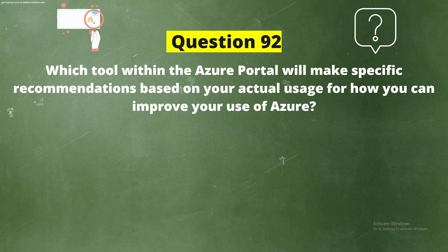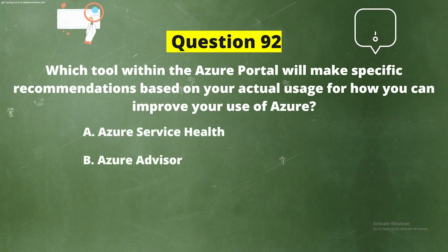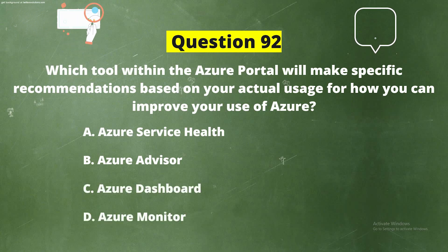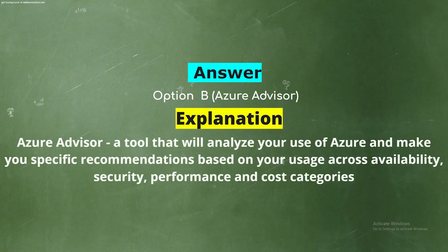Question 92. Which tool within the Azure portal will make specific recommendations based on your actual usage for how you can improve your use of Azure? The options are: Azure Service Health, Azure Advisor, Azure Dashboard, or Azure Monitor. The correct answer is Option B: Azure Advisor. Azure Advisor analyzes your use of Azure and makes specific recommendations across availability, security, performance, and cost categories.